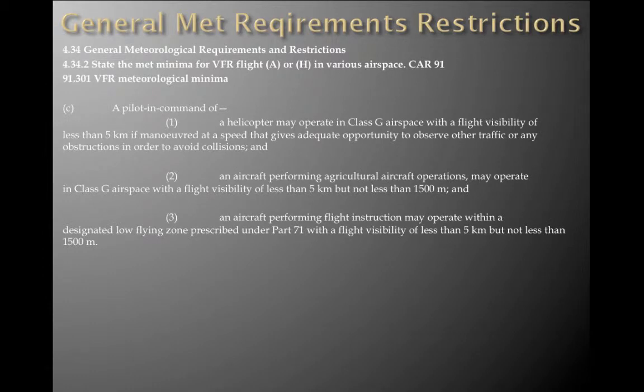Rule 91.301C exceptions: one, a helicopter may operate in Class G airspace with flight visibility of less than 5K if manoeuvred at a speed that gives adequate opportunity to observe other traffic or any obstructions in order to avoid collisions. Two, an aircraft performing agricultural operations may operate in Class G airspace only with flight visibility of less than 5K but not less than 1,500 metres. Three, an aircraft performing flight instruction may operate within a designated low-fly zone prescribed under Part 71 with flight visibility of less than 5K but not less than 1,500 metres.